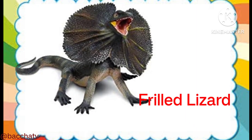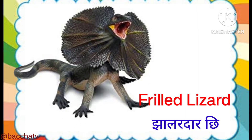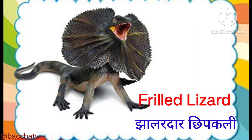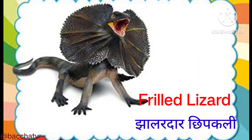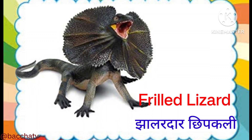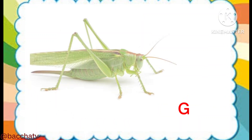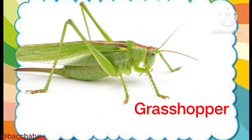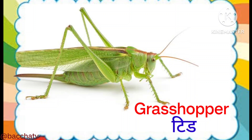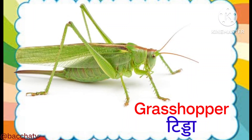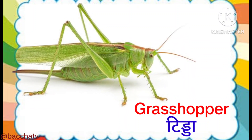Frill lizard — this is a frill lizard. Frill lizard means jhalda chhipkali. Grasshopper — this is a grasshopper. Grasshopper means tida.